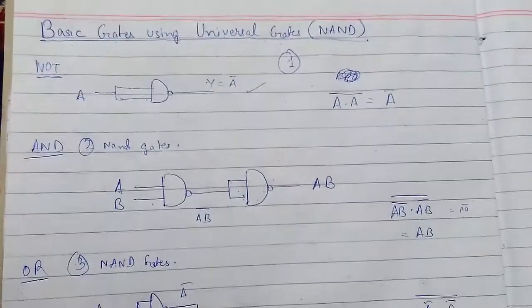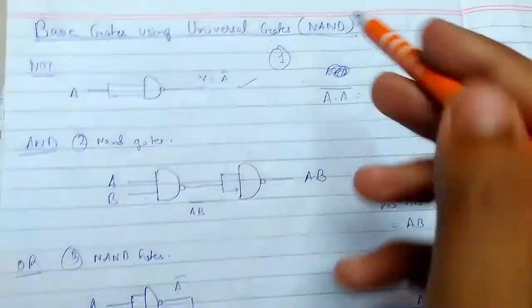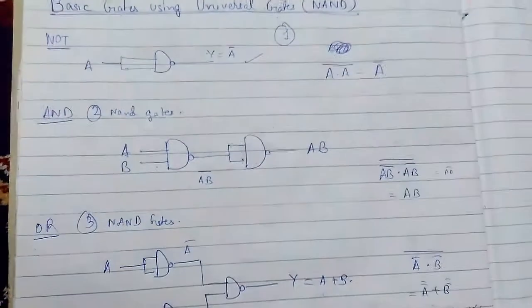So this is how you convert basic gates using universal gates by using NAND gate. So thanks for watching.